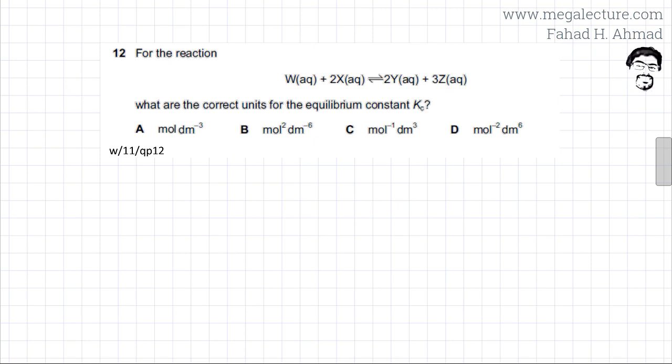Now to find the units, first you need to write down the expression for Kc. Kc is the ratio of the concentration of products divided by reactants.